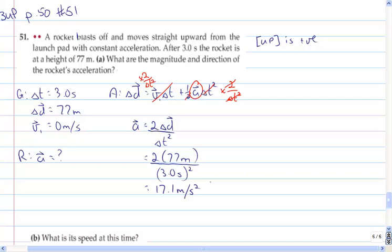So we have to rearrange before we can substitute and solve. Therefore, the rocket's acceleration is 17.1 meters per second squared. And since it's positive, upward.